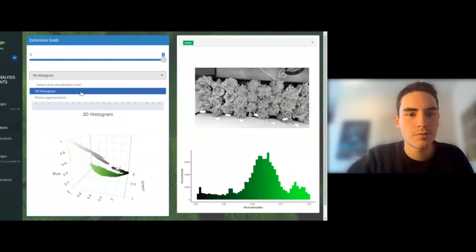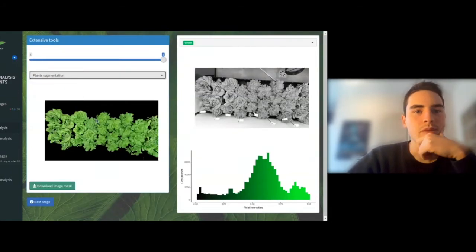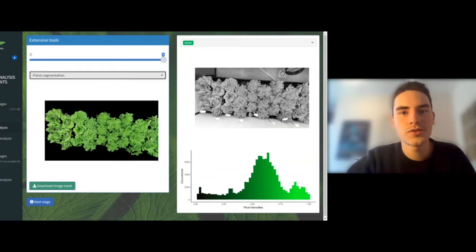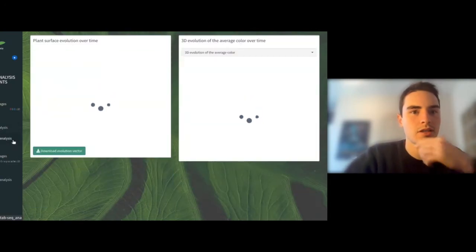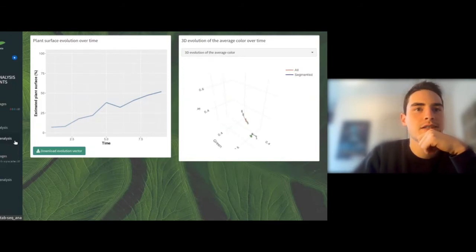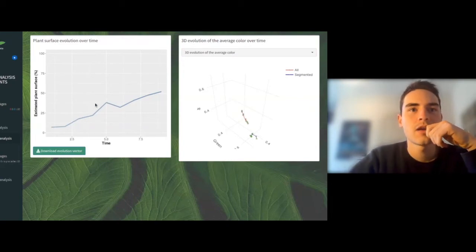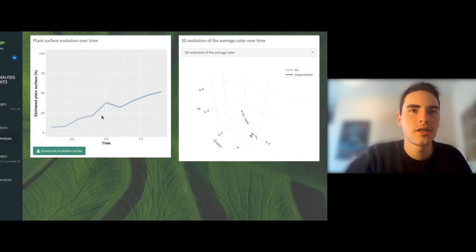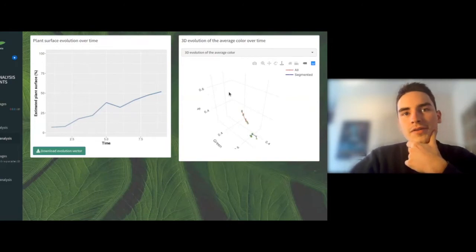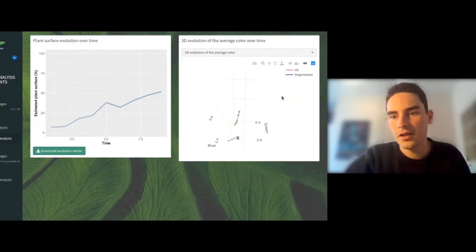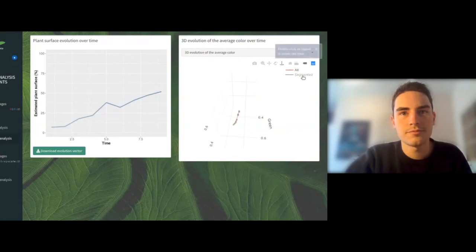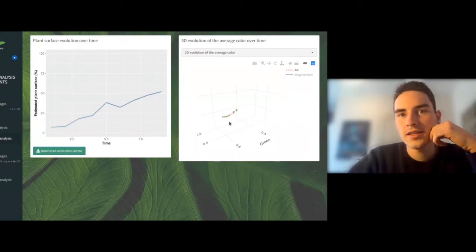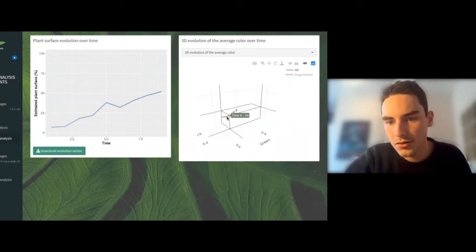We can now move to the plant segmentation. That calculation will allow us to go to the sequence analysis part. Once we have calculated the segmentation for each time, we can plot the plant's cover surface as a function of time. And at the right of the screen, we have the 3D evolution of the average color. If we include all the pixels like that, we can see that there is an evolution of the average color to the green.